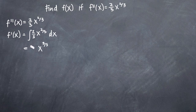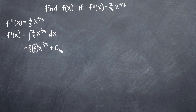Then we take the coefficient two-thirds and divide it by the new exponent five-thirds. Two-thirds divided by five-thirds — instead of dividing by five-thirds, that's the same thing as multiplying by the inverse of five-thirds, which is three-fifths. That is the integral of the second derivative, but of course whenever we take an integral we have to add c, so we'll get plus c, and all we need to do is simplify. Notice the three in the numerator and denominator cancel, so we'll get two-fifths x to the five-thirds plus c.